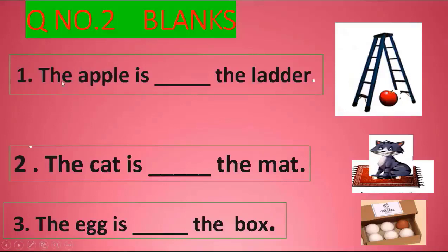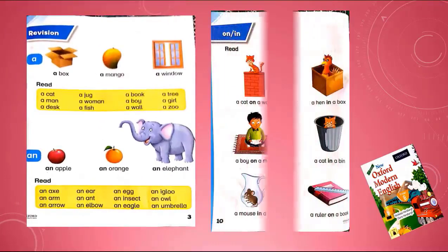This is all about preposition. Let's come to the question. Blank number one: the apple is blank the letter. Where is the apple? The cat is blank the mat. Where is the cat? The egg is blank the box. Tell me. So you have to do it by yourself.